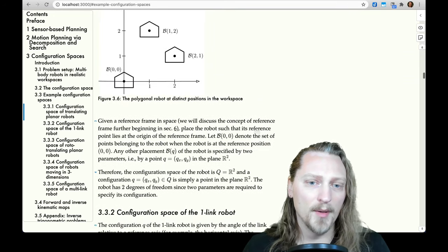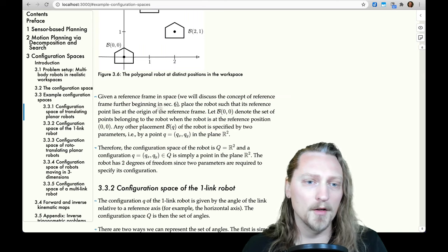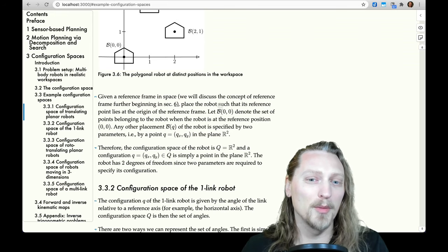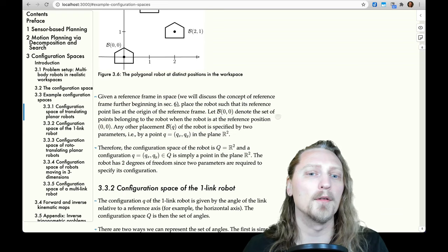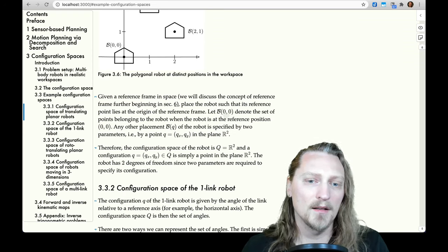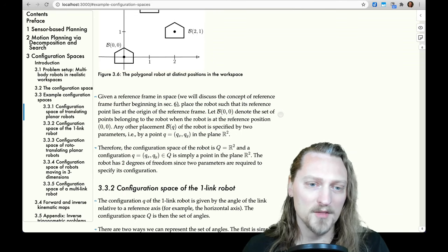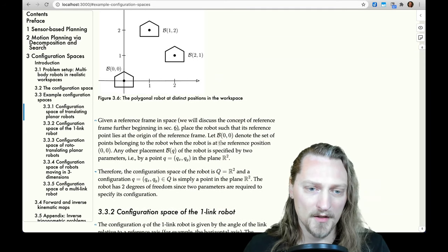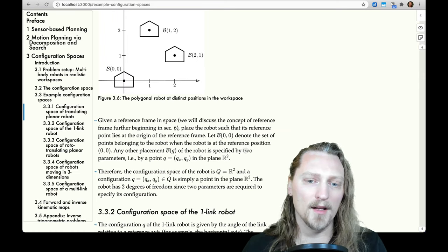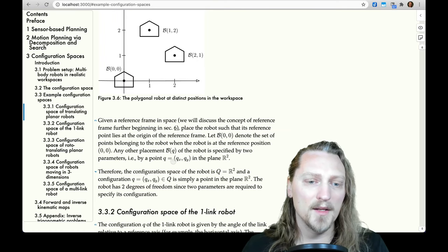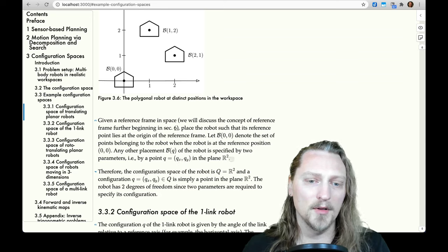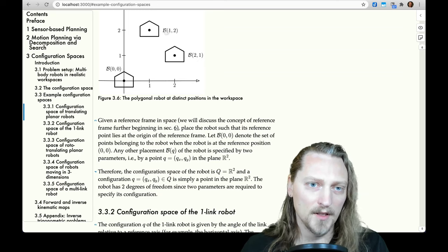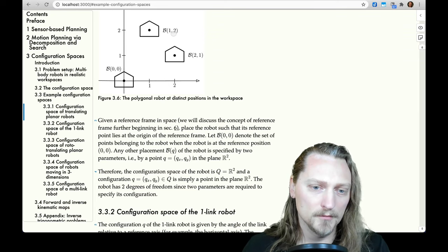Given a reference frame in space, we will discuss the concept of reference frame further beginning in chapter 6 of this book. Place the robot such that its reference point lies at the origin of the reference frame. Let B denote the set of points belonging to the robot when the robot is at the reference position (0,0). Any other placement B(Q) of the robot is specified by two parameters, by a point Q = (Qx, Qy) in the plane R^2. So here would be B at Qx being 2, Qy being 1, and B at Qx being 1, Qy being 2.